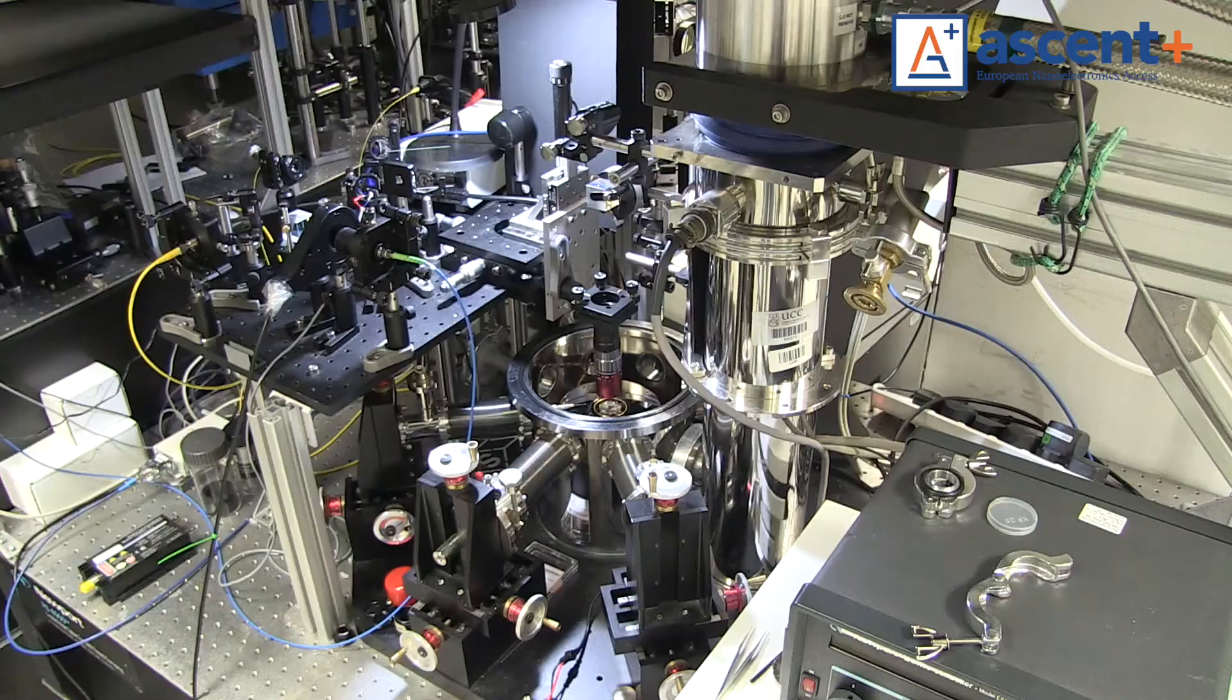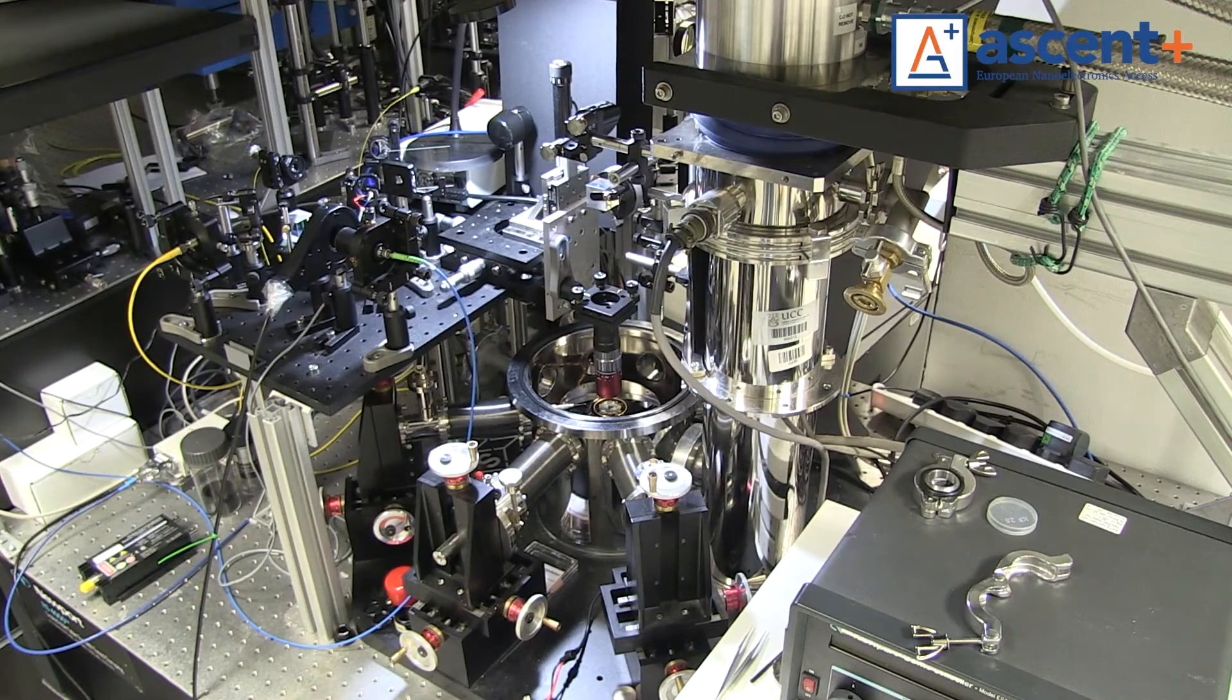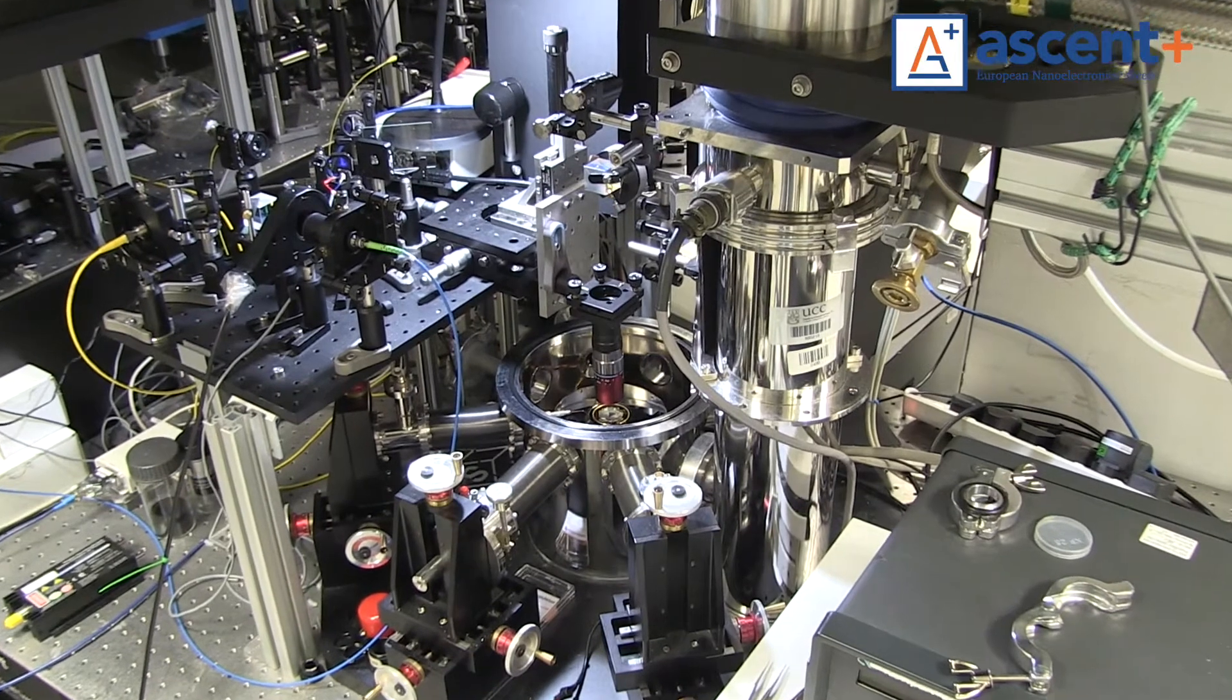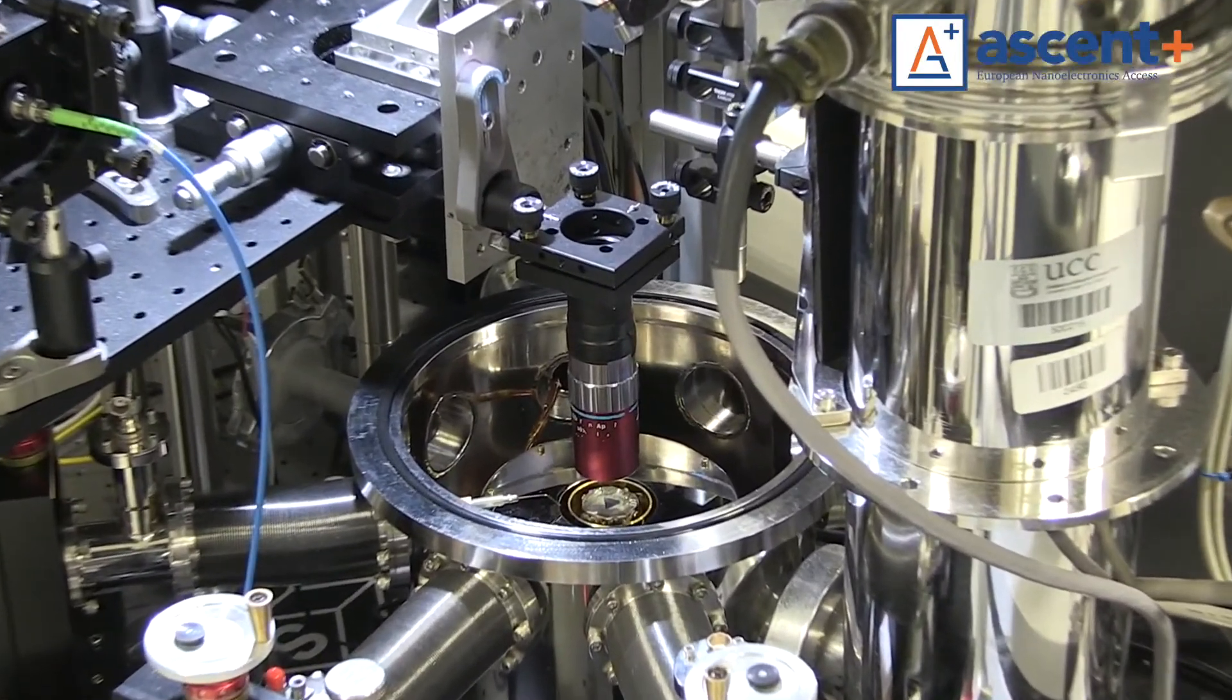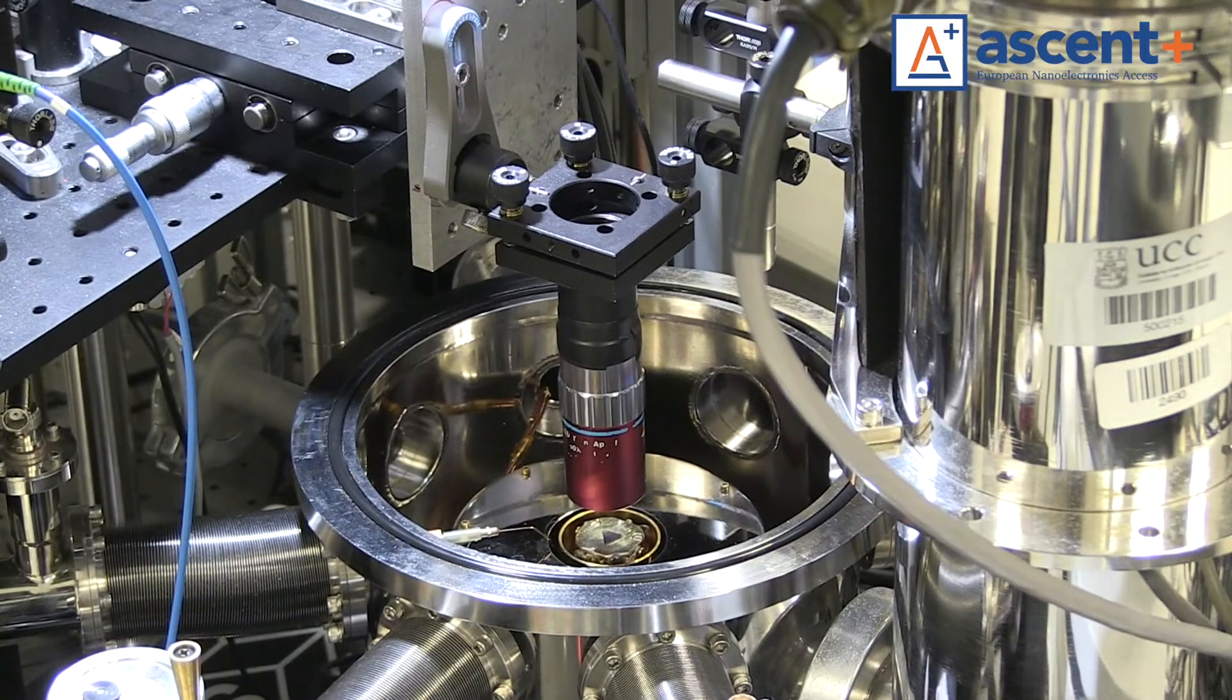Here we have one of the cryostats where we can place our sample and study its properties. Typically, the study of these properties is done by introducing some sort of perturbation. This could be current, this could be laser. In our lab, we typically use lasers.